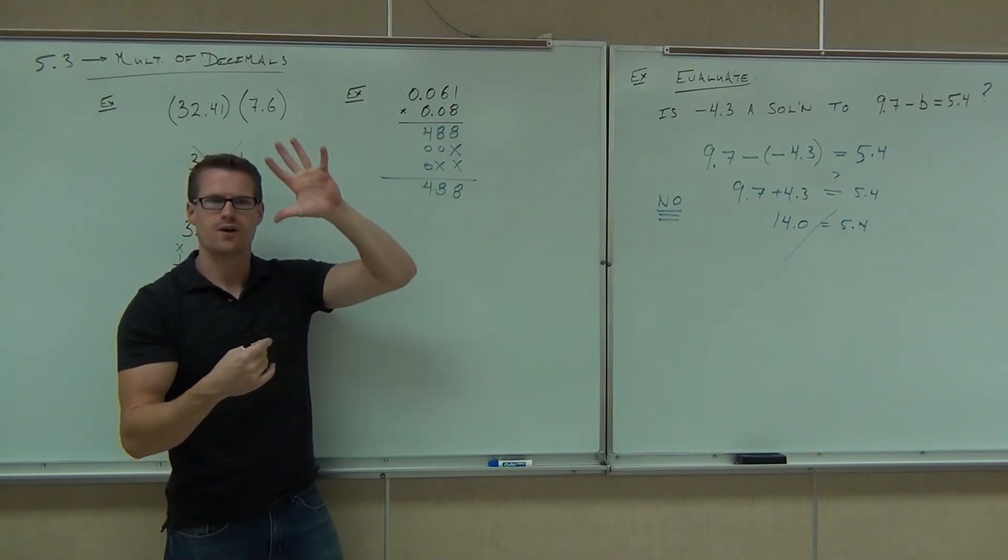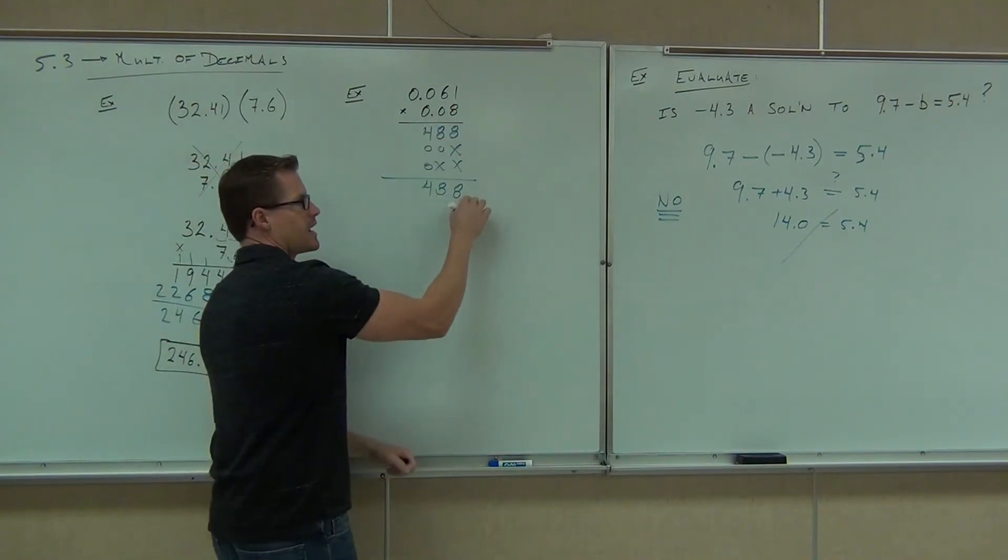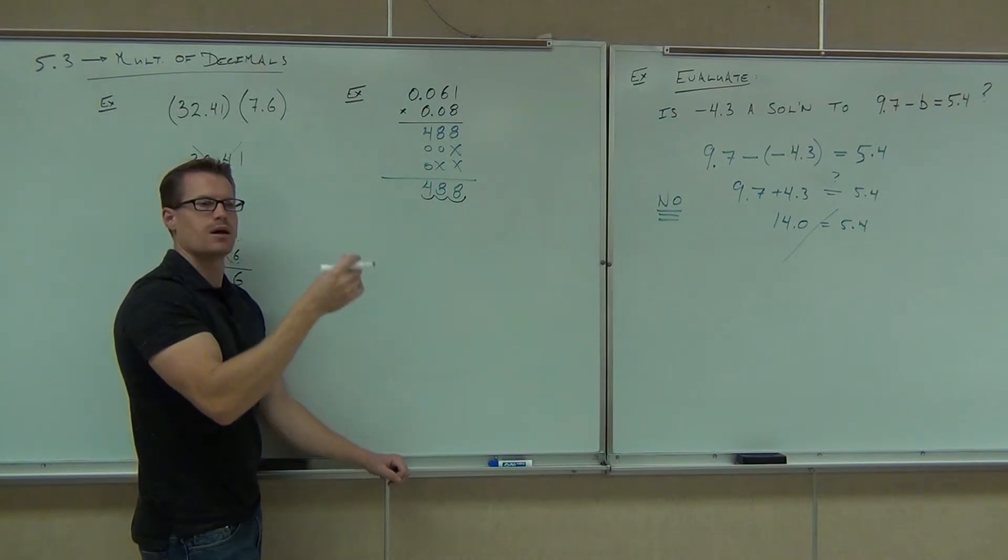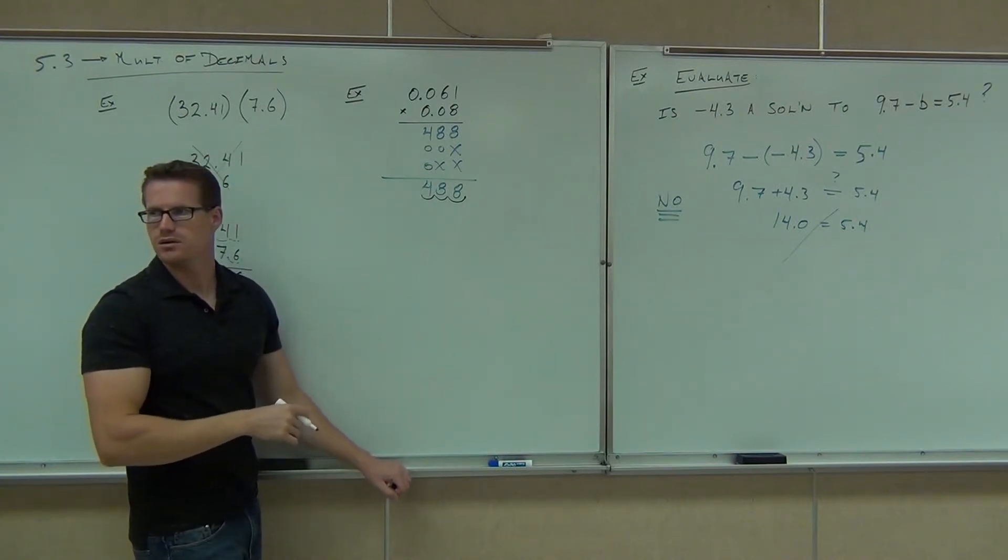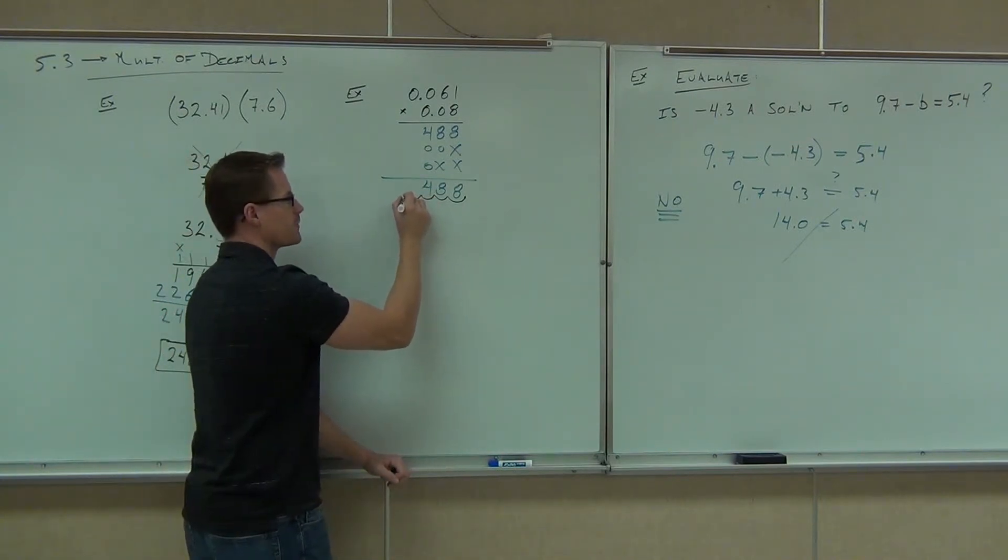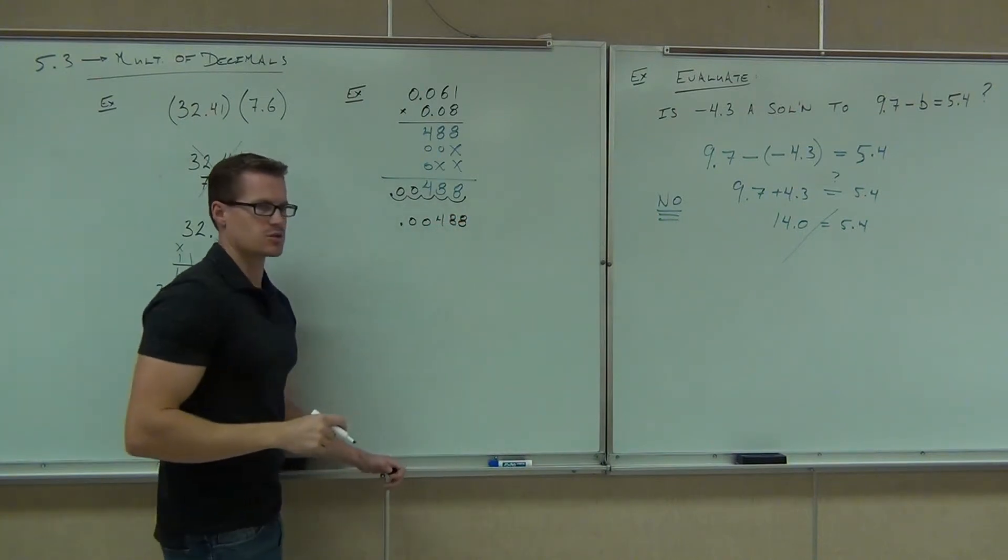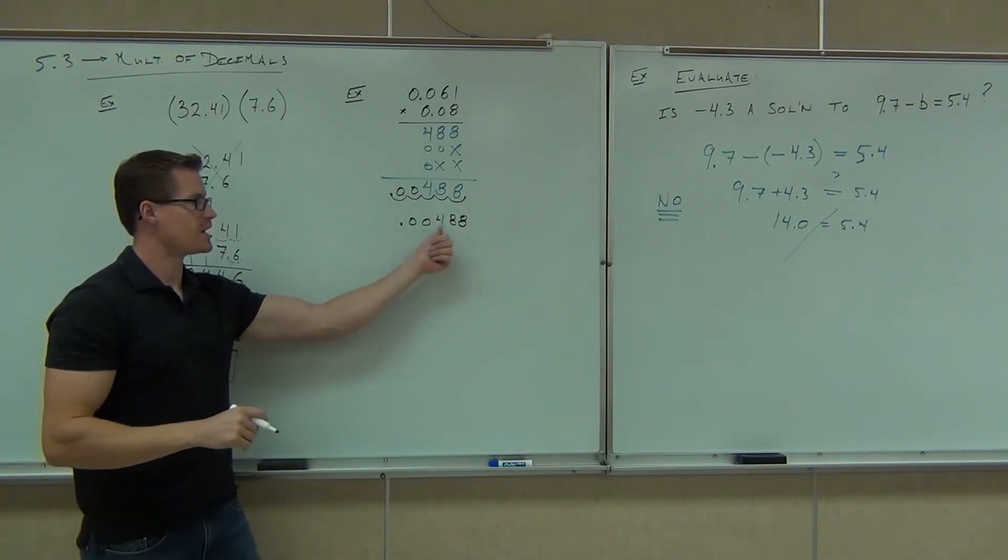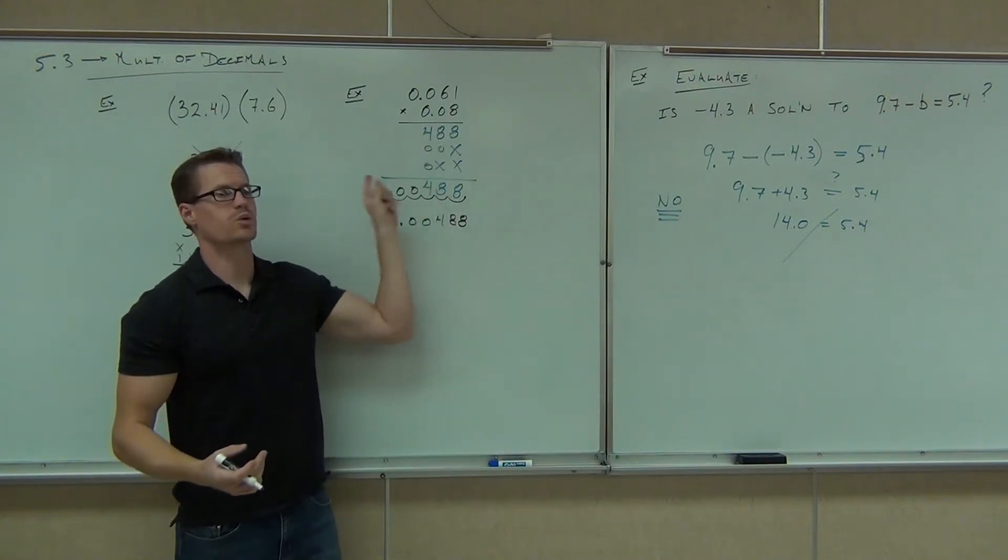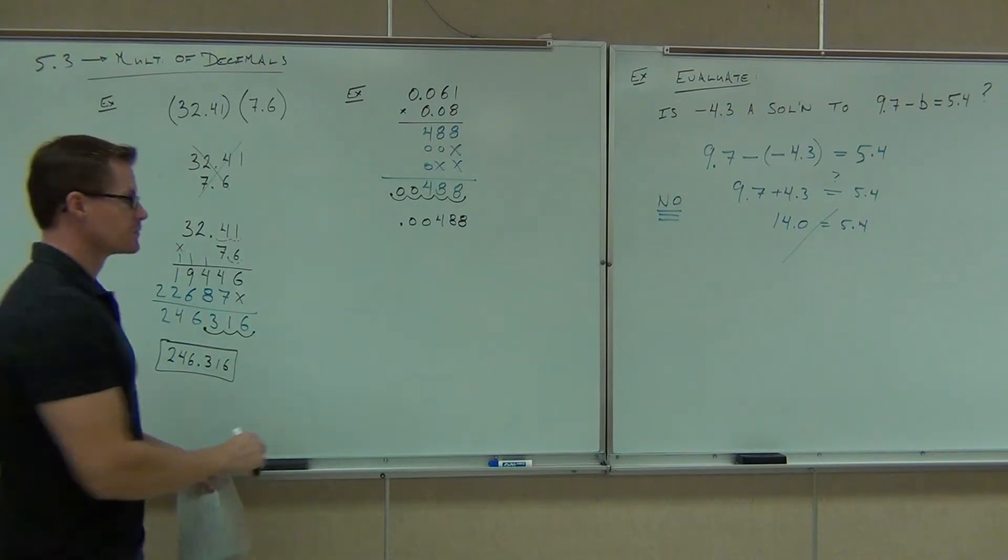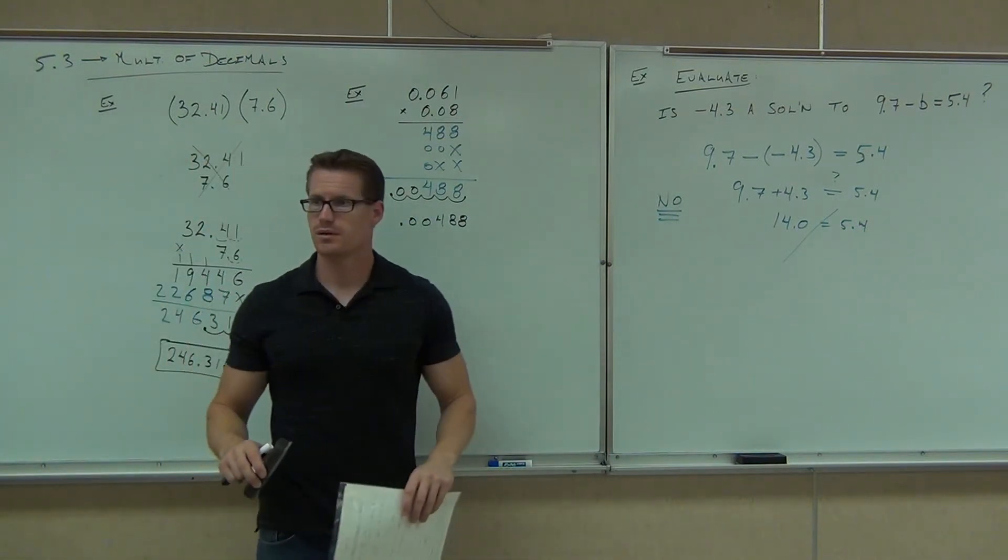Altogether, how many is that? Five. Five from the right-hand side over here. Five from the right-hand side. One, two, wait a second. What do you do? The 0s. That's where the 0s come back at you. Five total spots. You get 0.00488. And that's your answer. Five total spots from the right-hand side. That created those two 0s that you weren't really showing up here. So far, so good? All right.